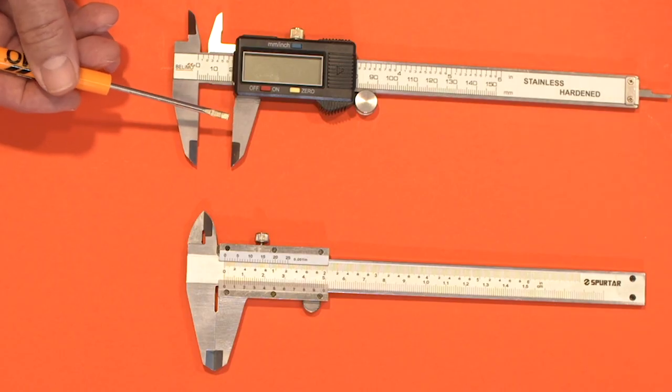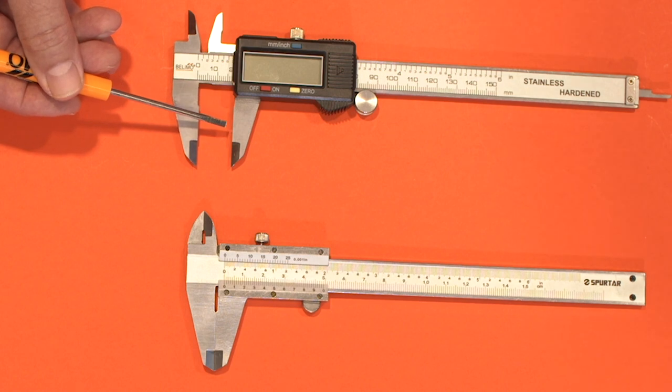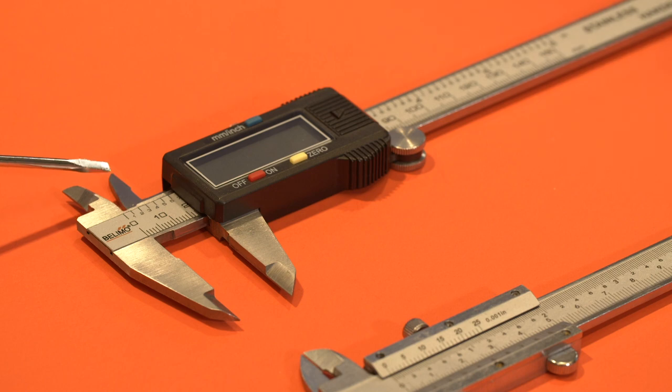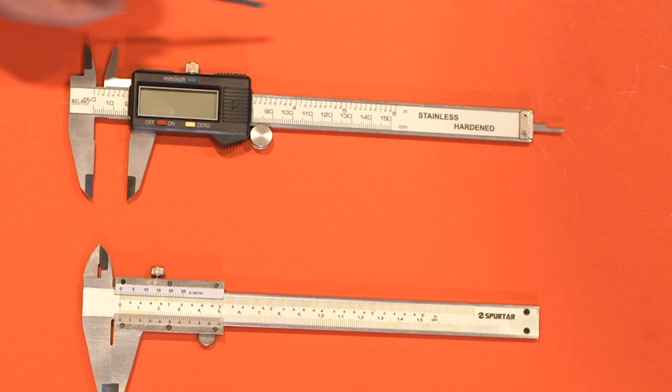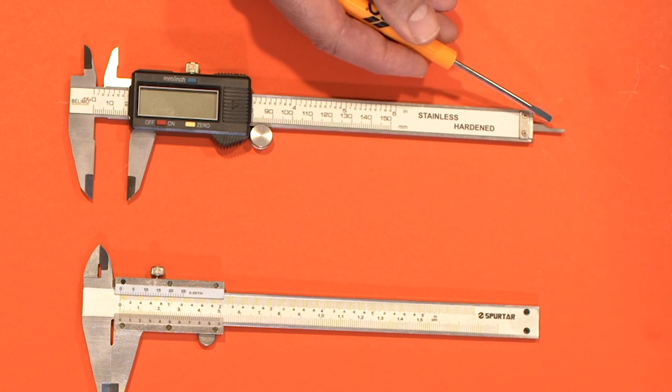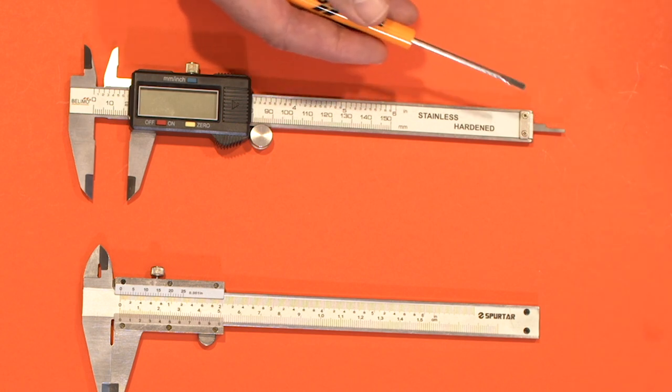Let's take a look at the calipers here. These lower jaws here are for measuring the outside diameter of an item. These upper jaws are for measuring the interior dimensions of an item. This rod that comes out of the end here is for measuring the depth of an item, and I'll show you how to do those three things.